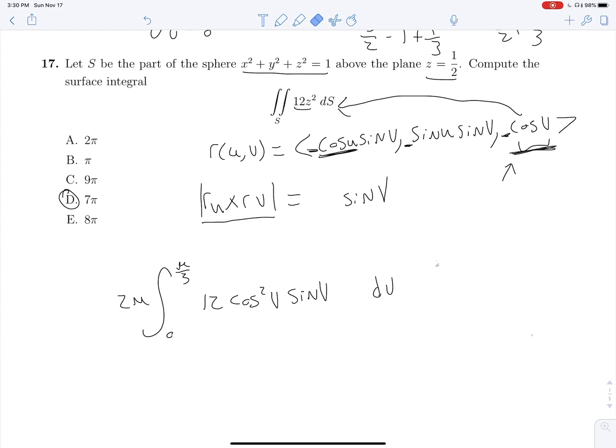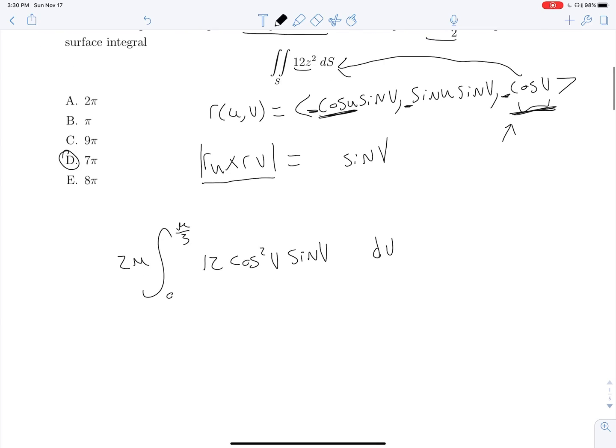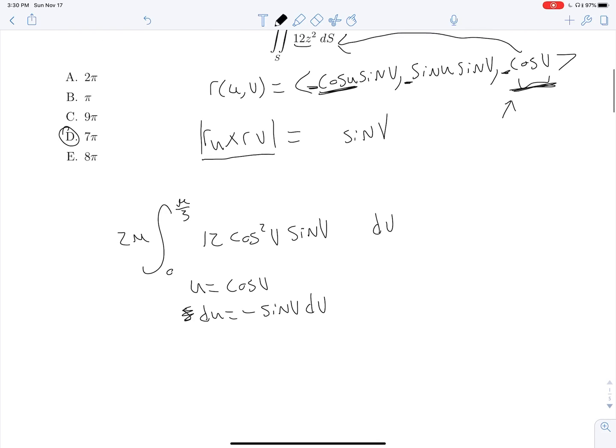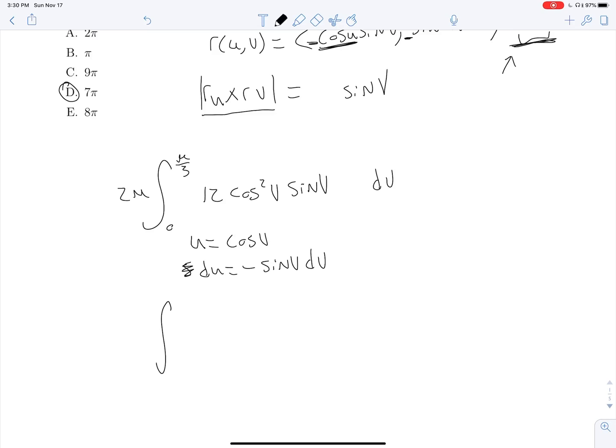And so now we're finally actually ready to do our integral. So we can set U to cosine V, and we can set DU to negative sine V DV, and rewrite everything. So we know that this will be 1 and 1 half, and we're dividing out our sine V, so this is going to be negative 2 pi, and let's actually move the 12 out here, negative 24 pi U squared DU, and we know that we can flip these bounds to cancel out the negative that we got from dividing out a negative sine.